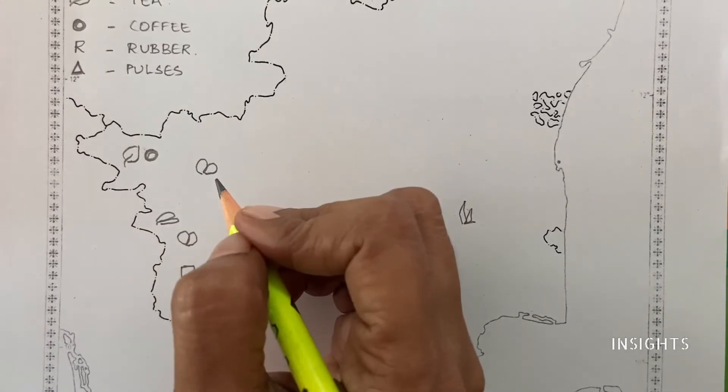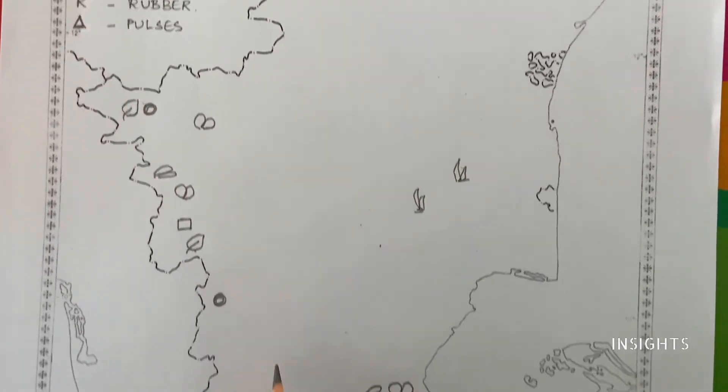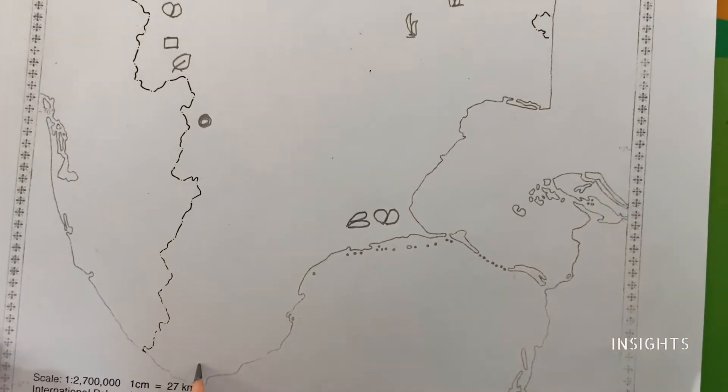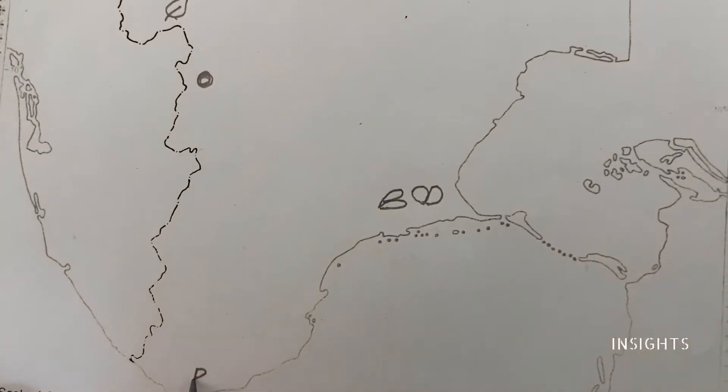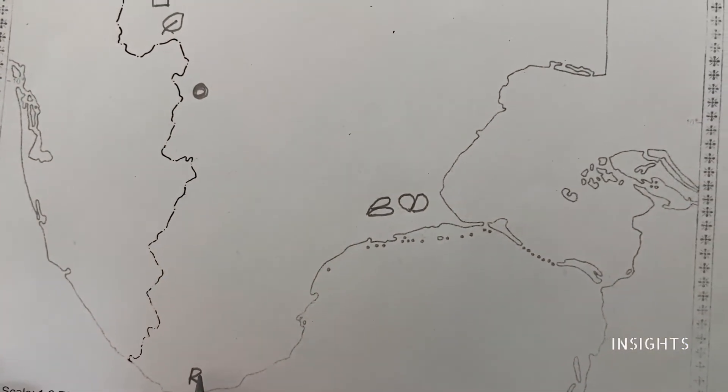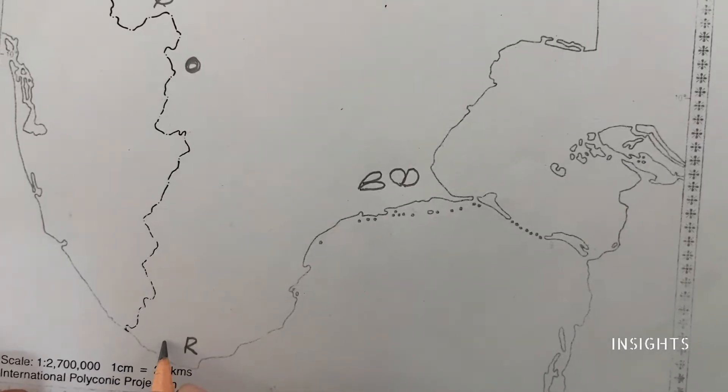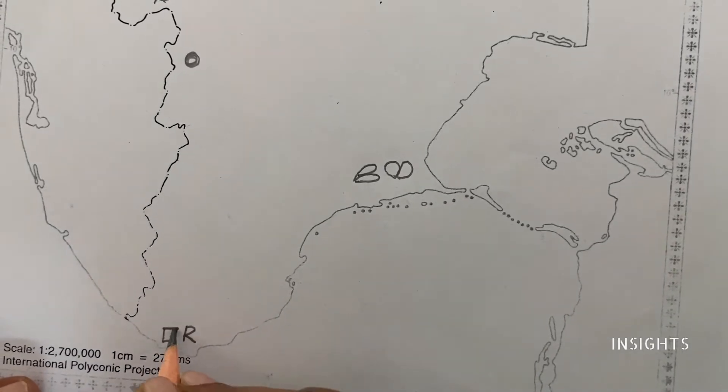Next is rubber. Rubber is down south, that is in Kanyakumari. Rubber. Actually, oil seeds here is also very important. So let us mark that oil seeds also here.